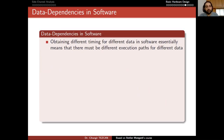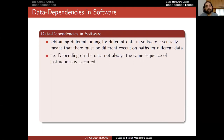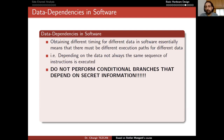Let's move on to data dependencies in software. Obtaining different timing for different data in software essentially means there must be different execution paths for different data. In other words, depending on the data, not always the same sequence of instructions is executed — the number of instructions executed depends on the data. So do not perform conditional branches that depend on secret information. This is really important.